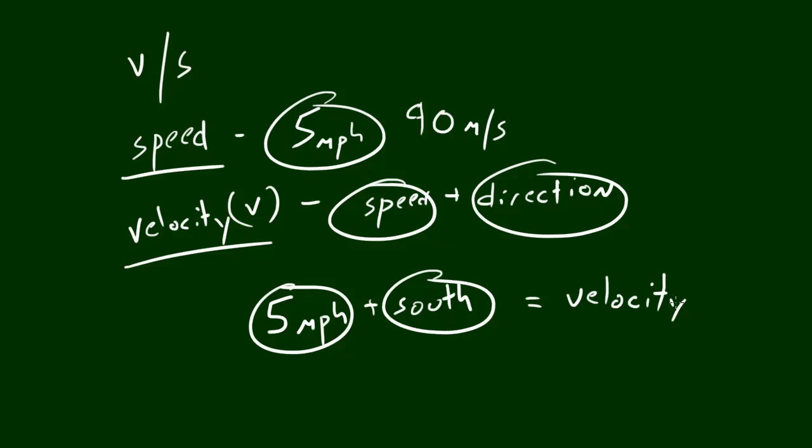So remember that whenever you have velocity, you need two key components. Not only speed, but you also need speed and direction. So that is basically velocity. Again, just remember that velocity is like speed plus a little bit. So now that we understand the difference between velocity and speed, I want to talk to you guys about another term that people get confused a lot, and that's displacement and direction.